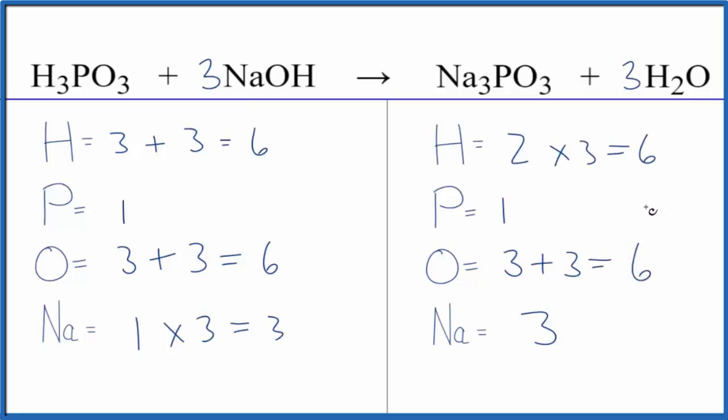This equation is balanced. Two tricks here. One, leave the oxygens until last. That's a good strategy, and be careful when you're counting these atoms up. We have hydrogens here and here, oxygens here and here, and so on.